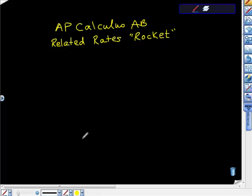AP Calculus AB Related Rates, the Rocket Problem. A rocket is shot vertically upward with an initial velocity of 400 feet per second. Its height after t seconds is S equals 400t minus 16t squared. How fast is the distance changing from the rocket to an observer on the ground 1800 feet away from the launch site when the rocket is still rising and is 2400 feet above the ground?